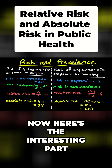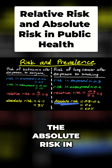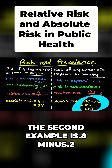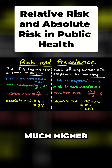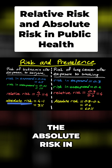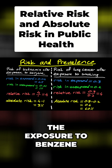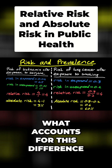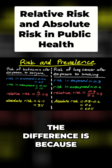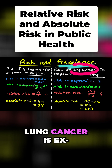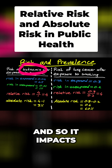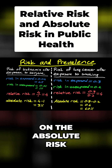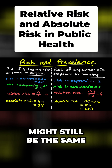However, here's the interesting part. The absolute risk in the second example is 0.8 minus 0.2, which is 0.6 — 60% — much, much higher. The absolute risk in the benzene exposure example was only 3%. What accounts for this difference? The difference is because of prevalence. Lung cancer is much more prevalent than leukemia, and so it impacts on the absolute risk, but the relative risk might still be the same.